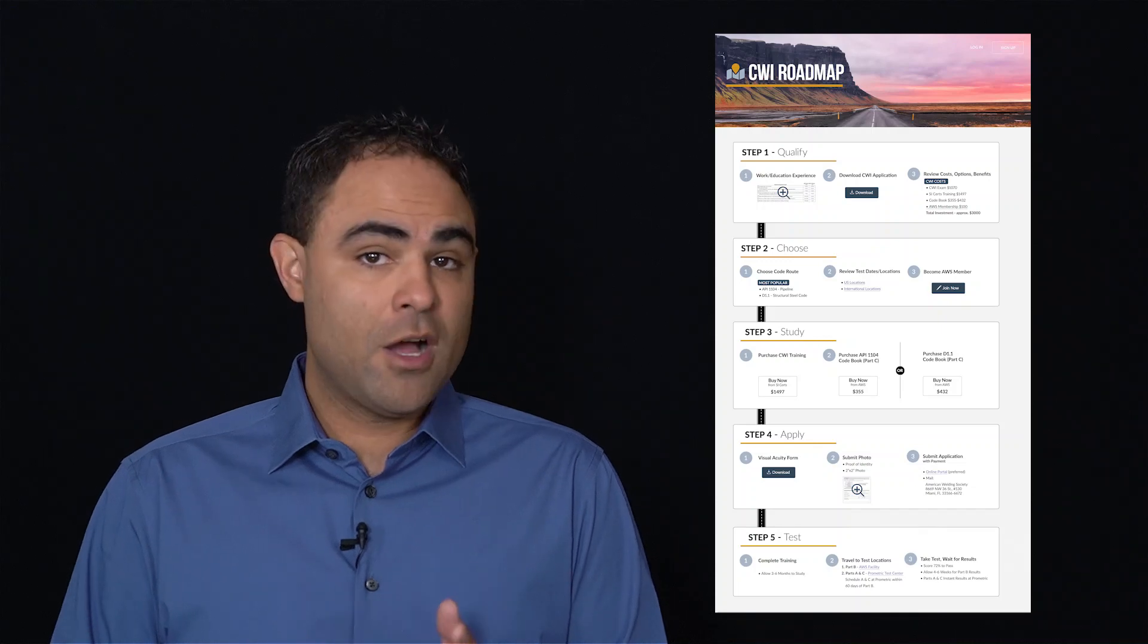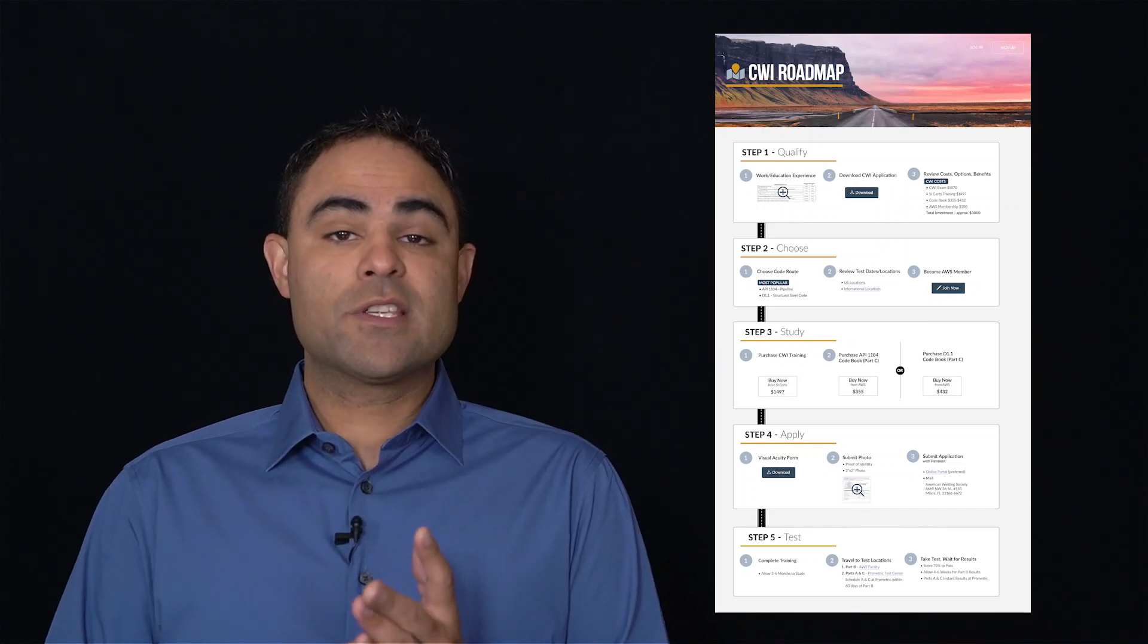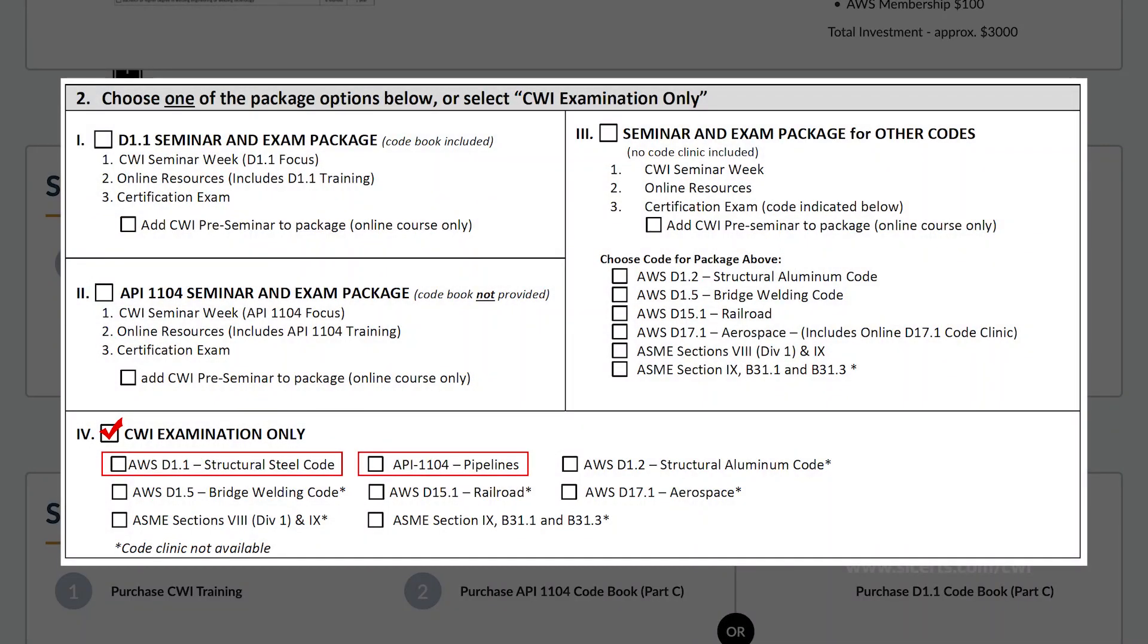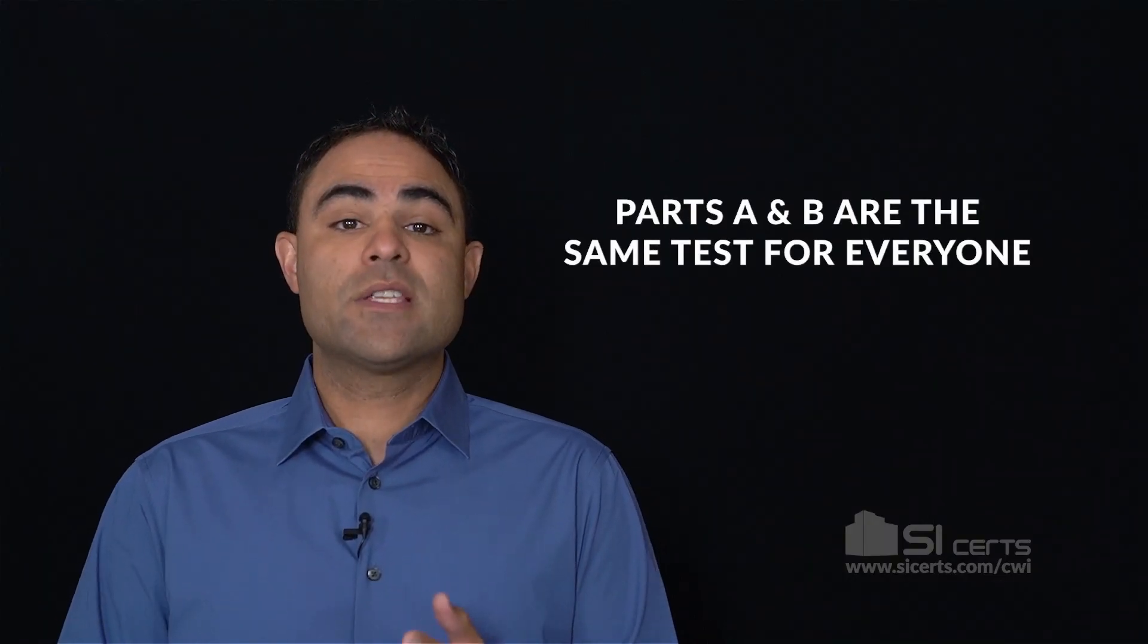When you're ready to budget for these costs, it's time to move to step two, which is choose. Choose a Part C codebook route. The most popular are the D1.1 and the API 1104. This is the codebook you will learn and use on Part C.